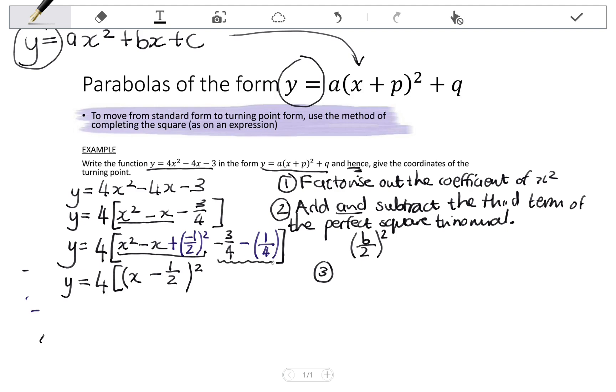Right, then I simplify what I'm left with, out beyond the perfect square trinomial, which is negative 3 quarters minus a quarter, which is negative 4 over 4, which is negative 1. Close your square brackets.